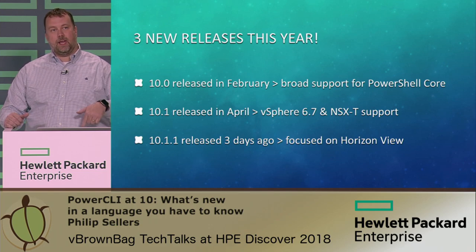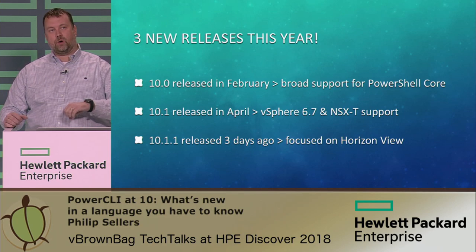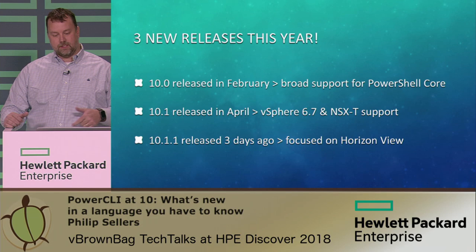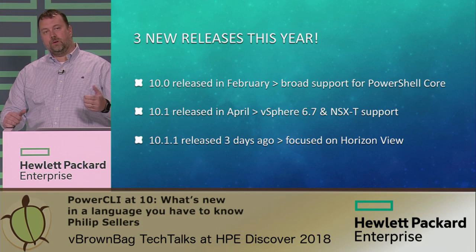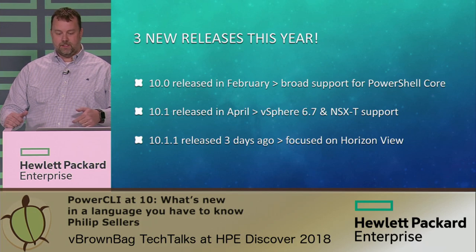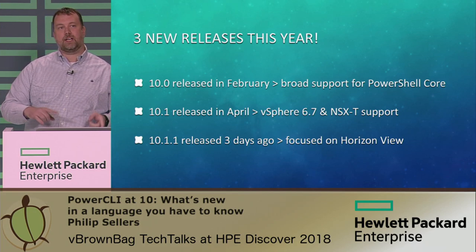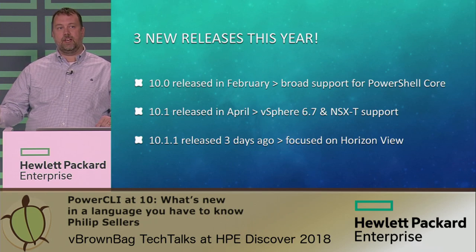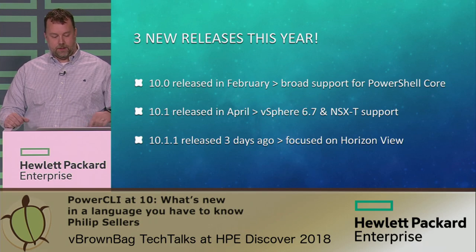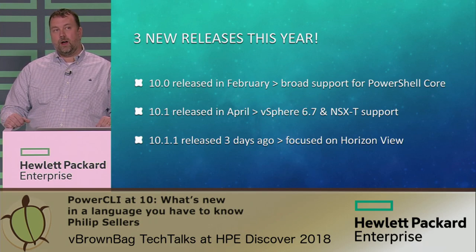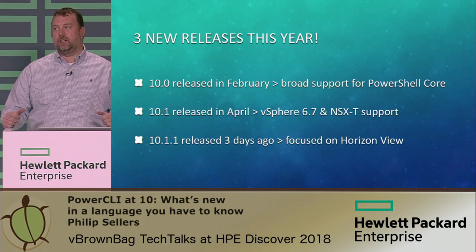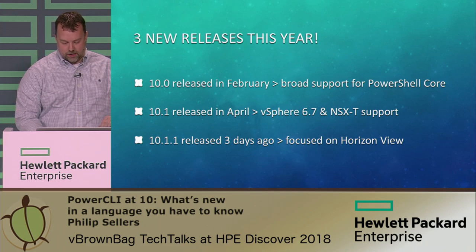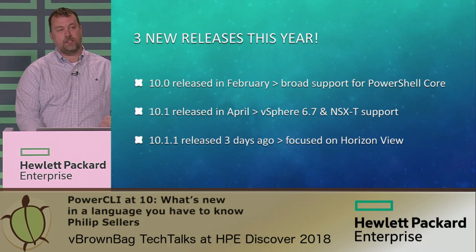Version 10.0 came with support for PowerShell Core, which brings PowerShell cross-platform to Linux and macOS. Version 10.1 was released in April and brought support for vSphere 6.7 and also NSX-T, which is NSX in the cloud. The first versions of that were released as a fling and have since been integrated. Version 10.1.1 brought a whole bunch of Horizon View goodness to the language, and at this point there are a total of about 20 modules in PowerCLI.